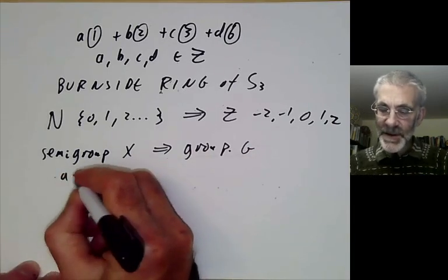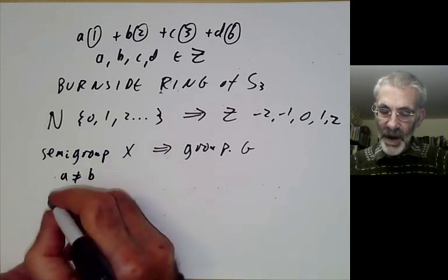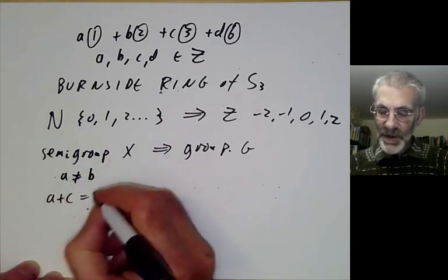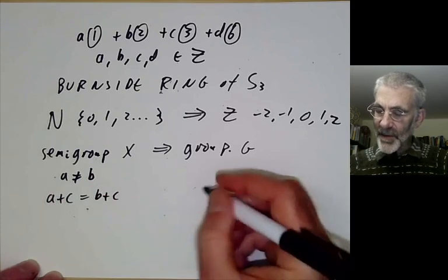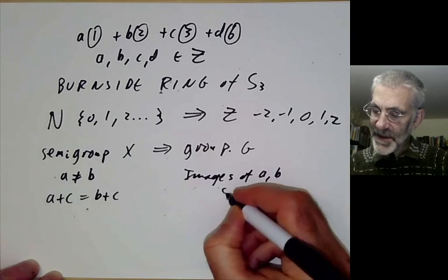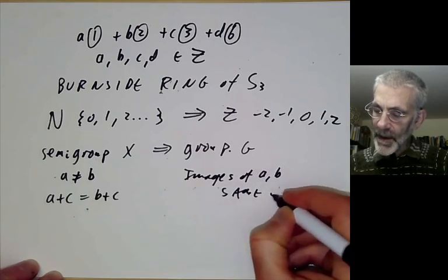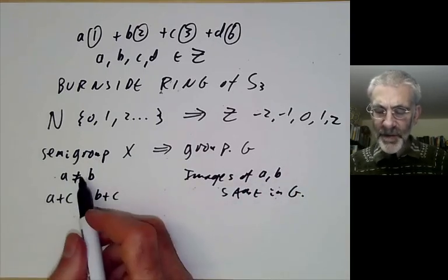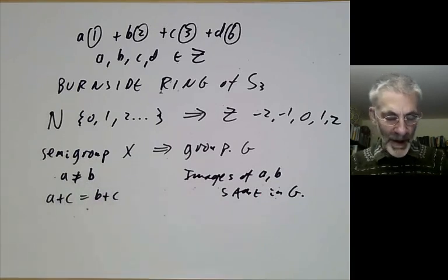For instance, if the semi-group has two elements a ≠ b but we've got a + c = b + c, this implies the images of a and b must be the same in the group G. This sort of phenomenon happens fairly often.